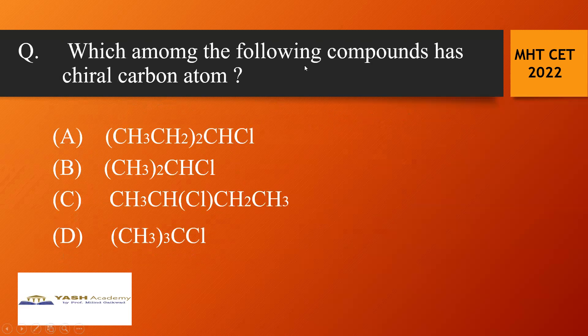Next, which among the following compounds has chiral carbon atom. Chiral carbon atom means a carbon which is attached or bonded to four different atoms or groups. So here if you observe if we consider this carbon atom it is attached to one hydrogen one Cl and two ethyl groups. So this carbon is not a chiral carbon atom.